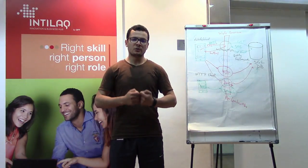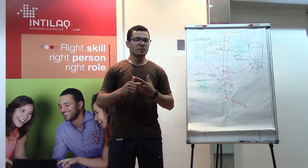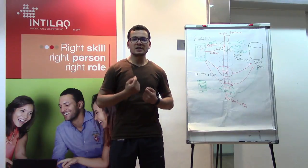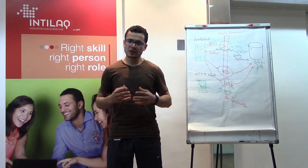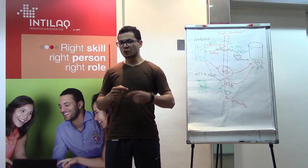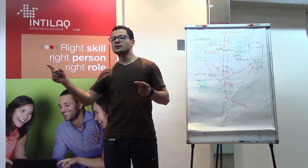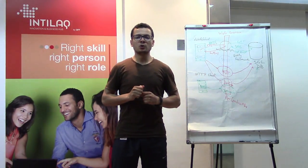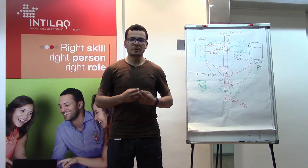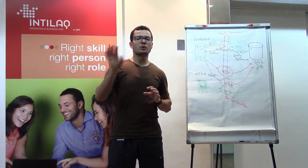In our Xamarin.Forms application, we have used one single instance of the main view model with our three pages: the main page, the search page, and the add new employee page. We made sure of this by creating the instance of the main view model inside the main page, then passing that instance to the search page and the add new employee page using the constructor of those two pages.